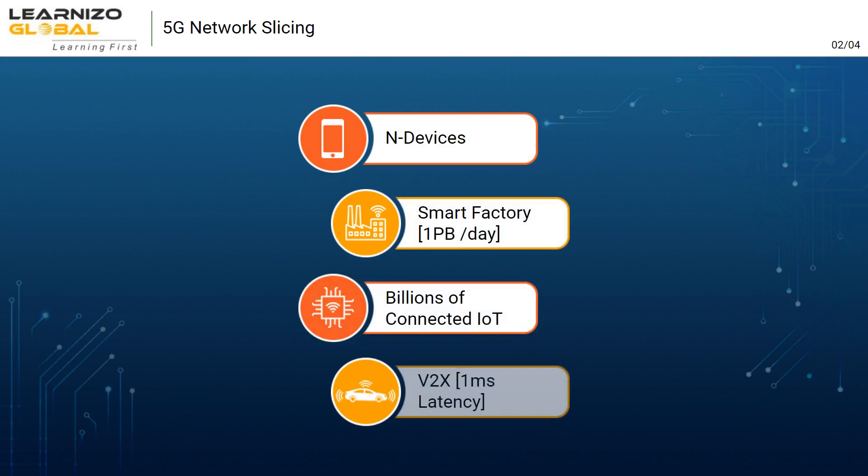The 5G service verticals are named eMBB — enhanced mobile broadband, URLLC — ultra-reliable and low-latency communication, and MMTC — massive machine type communication.